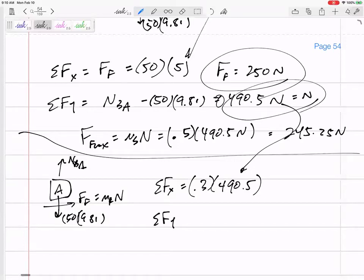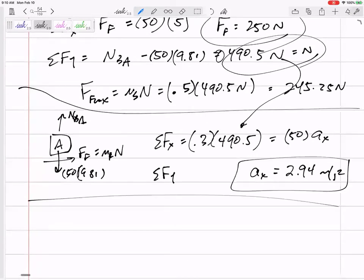So N is still 490.5 equals mass times acceleration in the X. So the acceleration in the X would be 2.94 meters per second squared.